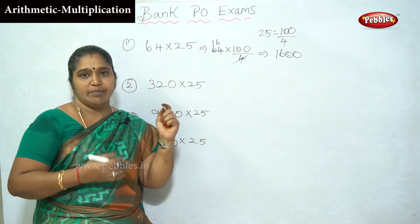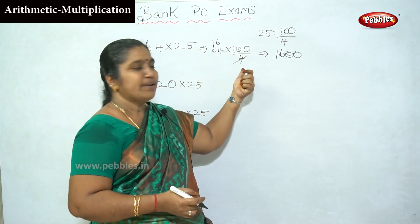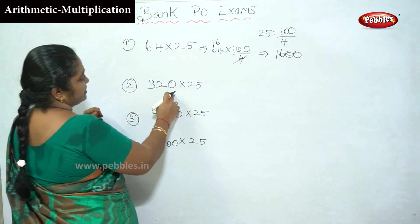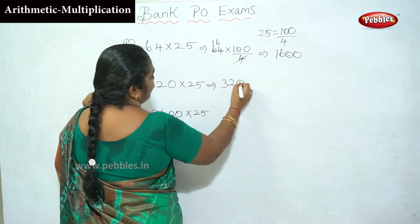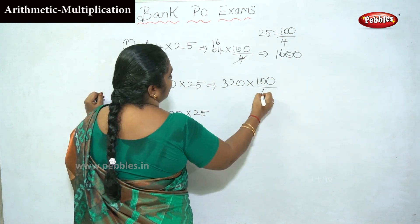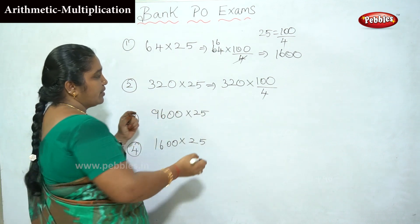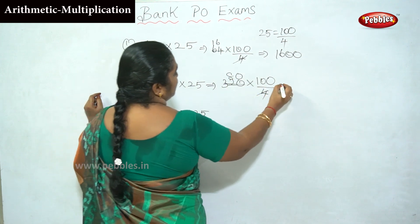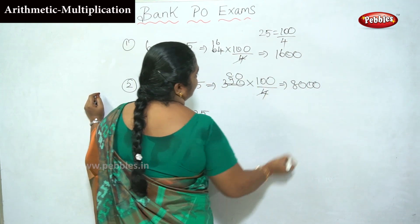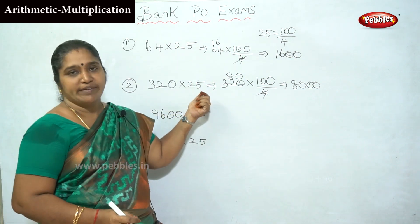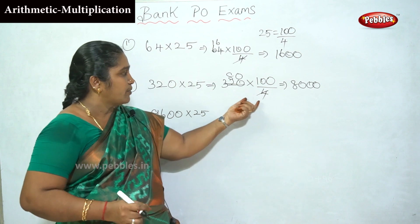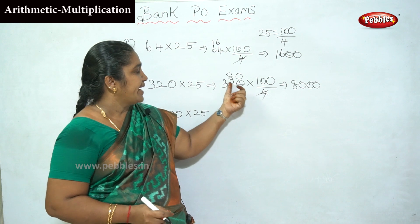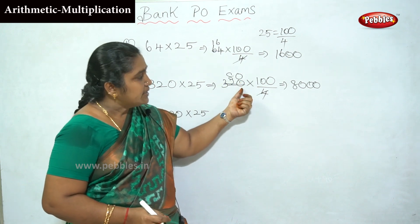64 into 25 — use 5 table and 2 table, multiply by 100 by 4. Now 320 into 25: 320 into 100 by 4. Cancel 4 from 320, you get 80. Total answer is 8,000.